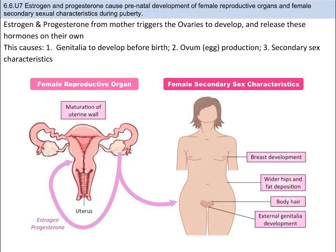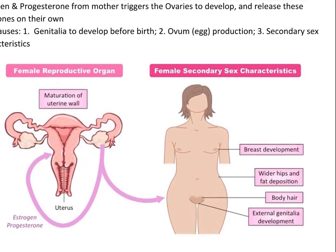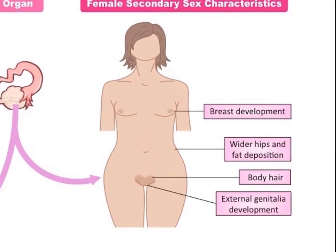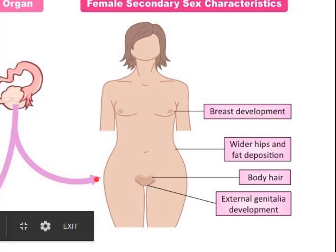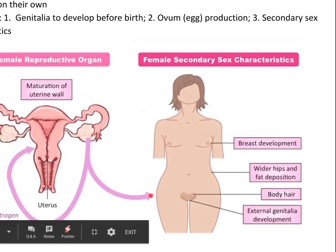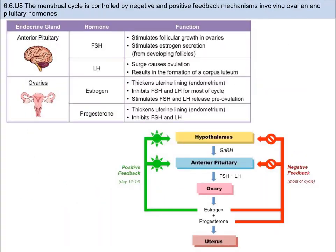These ovaries in the embryo begin to release estrogen and progesterone on their own. Once the onset of puberty begins, they are then involved in the monthly preparation of the egg release, which is better known as the menstrual cycle. Estrogen and progesterone are also responsible, just like testosterone, for the female's secondary sex characteristics, like breast development, widening of the hips, body hair, and the development of external genitalia.